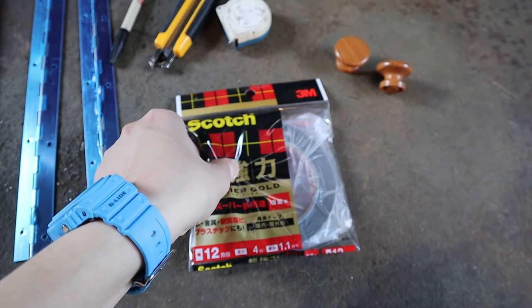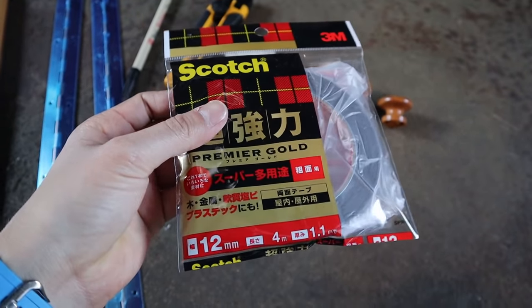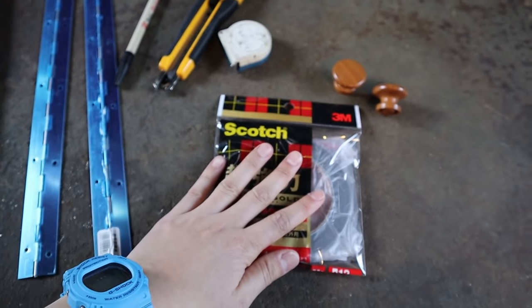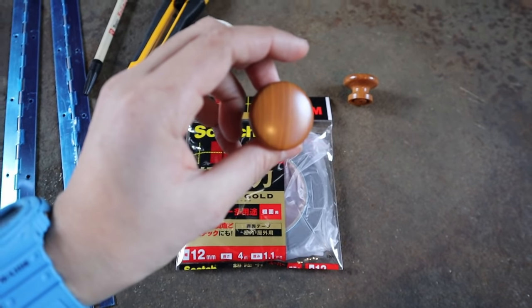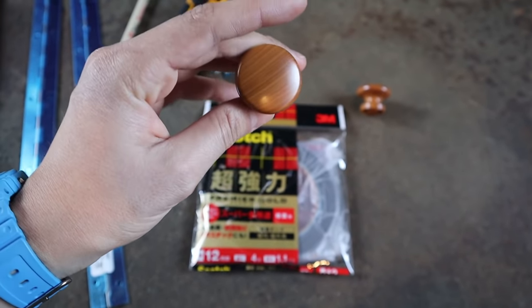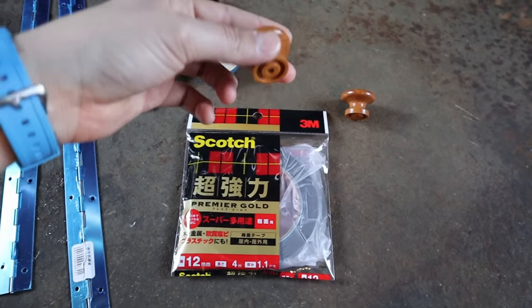You'll need tape. This is some really strong tape, the strongest one I could find. You want to get some strong tape. And of course, last but not least, your door knobs to open and close the lid.